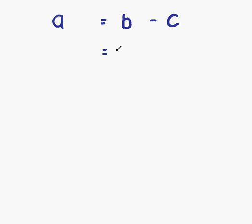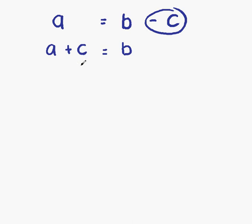A better approach is to move the minus c. If we move minus c onto the other side, change side change sign, it becomes plus c. Writing down the things that stay where they are: a on the left and b on the right, then minus c changes side and changes sign to become plus c. So we have a plus c equals b. We want c on its own, so the next thing to move is the a. Moving a — which means plus a — changes side to become minus a. We now have c as our subject, so our formula is c equals b minus a.